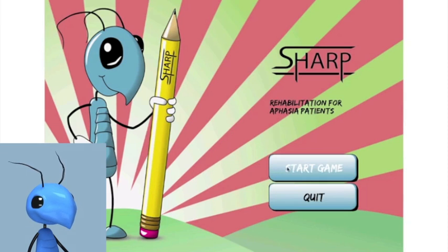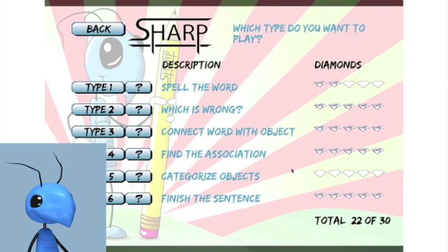When you open the tool and press start game, you will be presented to the level select screen which has several types of tasks. Each of these tasks are designed to train different parts of the brain.